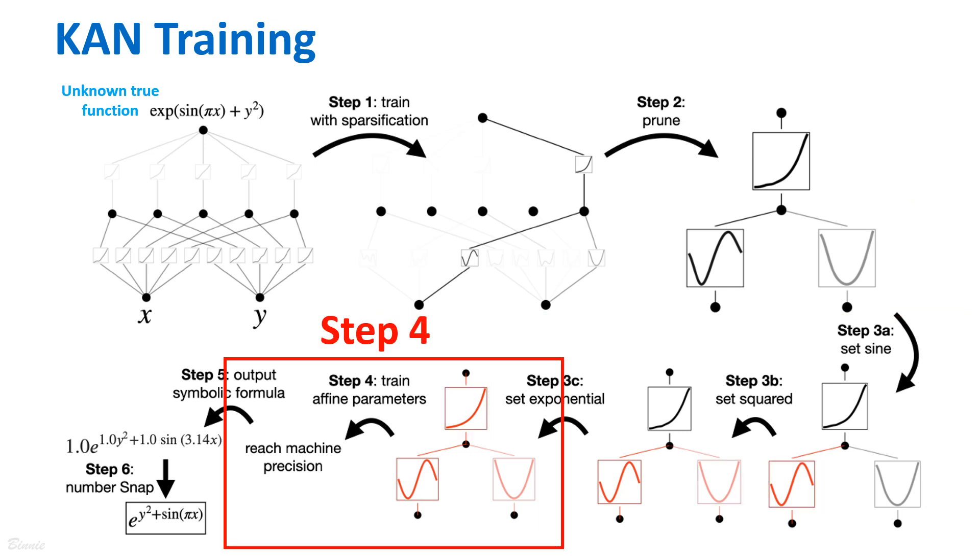Let's move on to step four, further training. Once all the activation functions in the network have been symbolified, the only remaining parameters are the affine parameters. At this stage, the user can continue training these affine parameters. During this phase, the user can monitor the loss function. When the loss drops to machine precision, it indicates that it has likely found the correct symbolic expression that accurately represents the underlying mathematical relationship within the KAN.